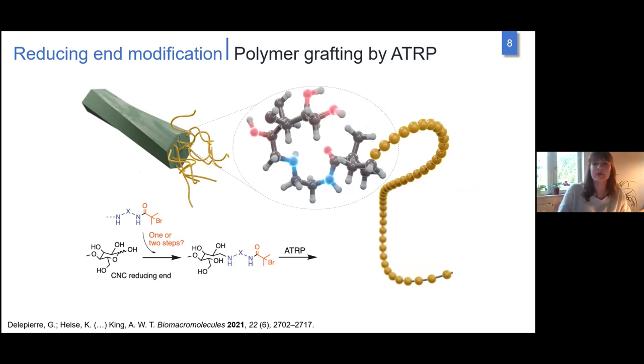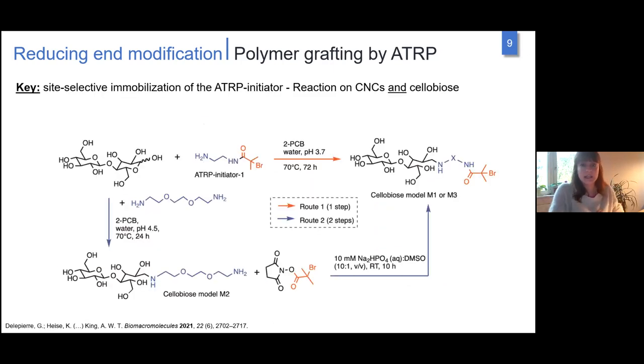Our recent work, mainly Gwendoline's work, is on polymer grafting by atom transfer radical polymerization, a controlled polymerization approach selectively from the reducing end groups. The key step is to first immobilize covalently the ATRP initiator at the reducing end. We modified cellulose nanocrystals and as a model compound also cellobiose.